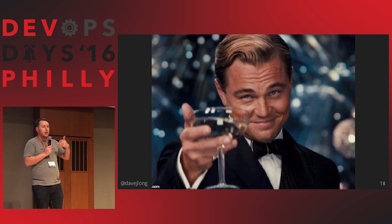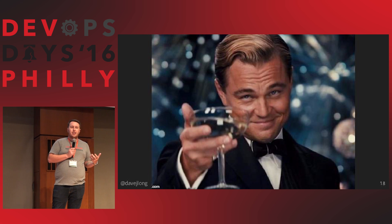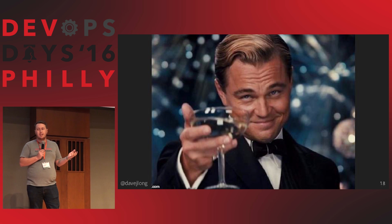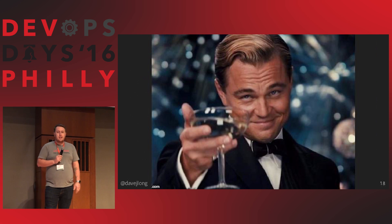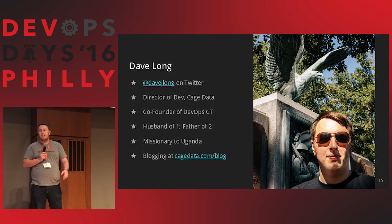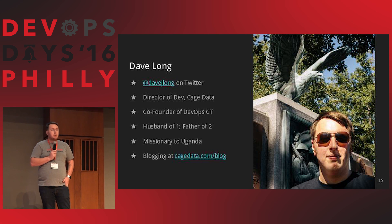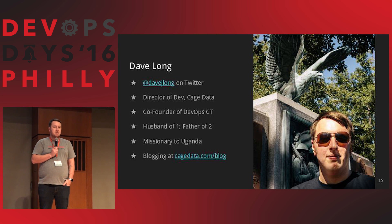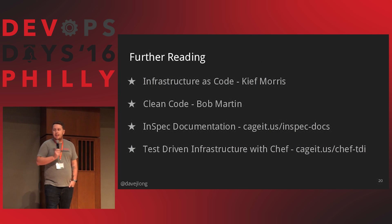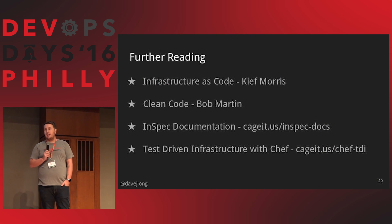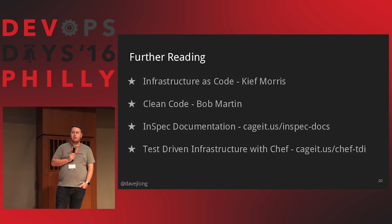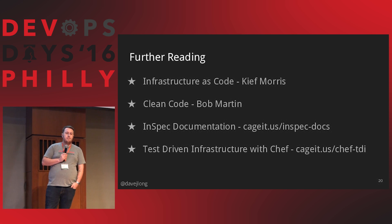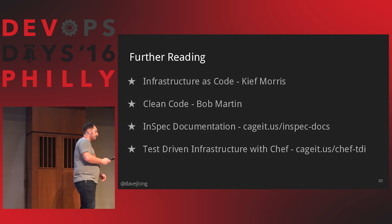So we're now testing our code, we're now getting code out there. And the problem of having code that three months later I don't even know what it was doing or why, we now have an understanding of that. My name is Dave Long — you can find me on Twitter, you can find me online. I'm a developer by trade coming into the DevOps realm, and I'm one of the co-founders of DevOps CT up in Connecticut. There's a fantastic book, Infrastructure as Code, that came out. Bob Martin's Clean Code is always a fantastic read. And there's stuff online you can get into and find more information. Thank you.